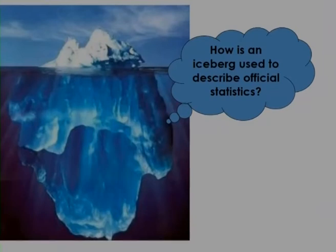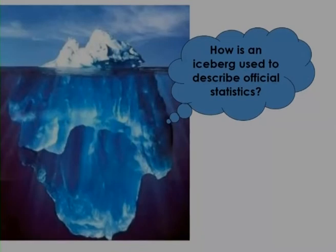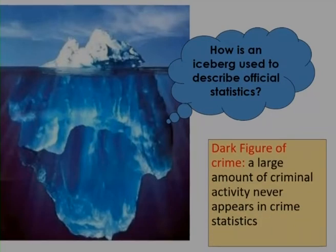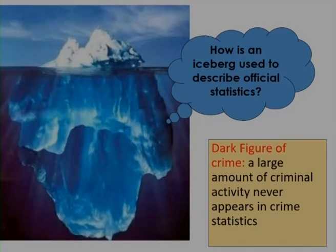Sometimes sociologists look at this issue and refer to the idea of an iceberg to explain what we see with official crime statistics. The bit that we do see — what appears in the crime statistics — is the iceberg above the water. The huge piece of ice underneath the water reflects all the criminal activity that clearly happens but we don't see. This is known as the dark figure of crime — a huge amount of crime that's happening that we never know about or hear about officially.